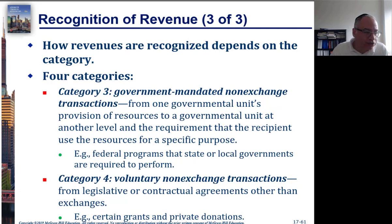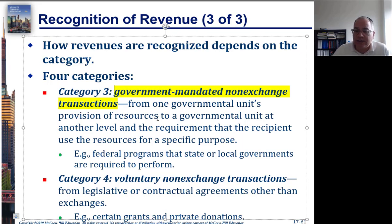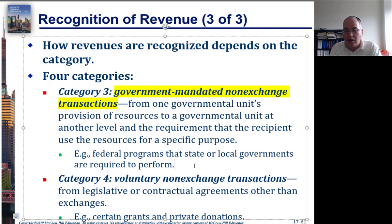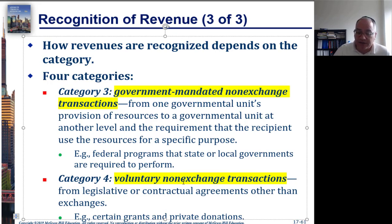Category three is government-mandated non-exchange transactions — these go between different governments, involving one governmental unit's provision of resources to another at a different level, with a requirement that the recipient use the resources for a specific purpose. These are mainly grants from the federal government to state or local units, where the government requires you to do certain things and gives you money to do them. Category four is voluntary non-exchange transactions — grants where you receive money from other governments to do a specific thing.